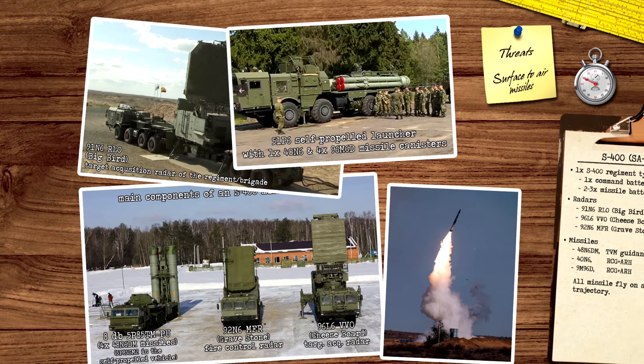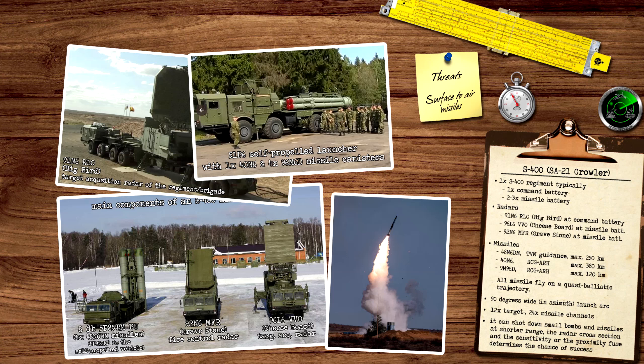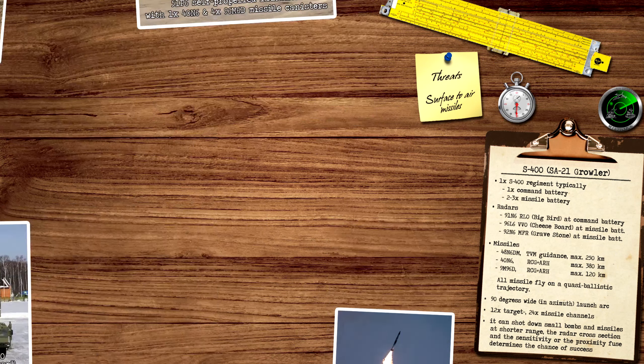The S-400 is also able to use the shorter range 9M96D missiles. It is also an active radar guided missile like the 40N6 type, but its maximum engagement range is only 120 km and the onboard radar has less tracking range because of the smaller antenna. A single missile battery has 12 target channels. It can engage 12 targets with 2 missiles per target. Because only the fire control radar can send the missile guidance signals, the engagement arc is limited to 90 degrees, which is the angle tracking limitation of the radar in a set position.